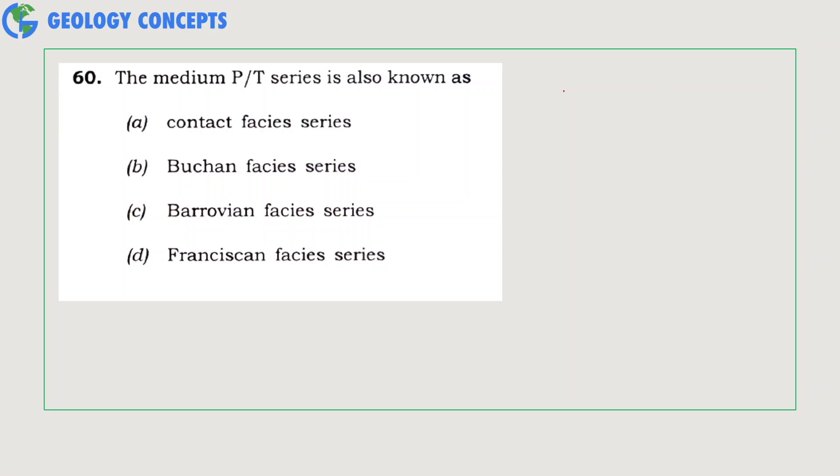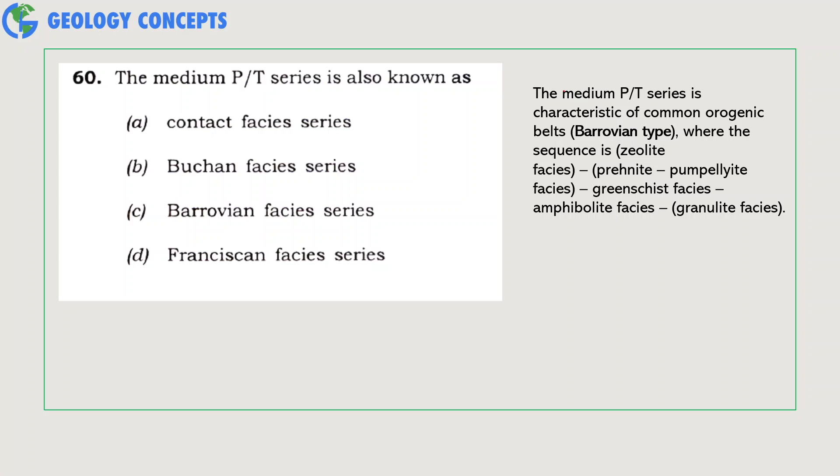The medium pressure/temperature series is also known as contact facies series, Buchan facies series, Barrovian facies series, or Franciscan facies series? The medium pressure/temperature series is characteristic of common orogenic belts which are typically referred to as Barrovian type, where the sequence is zeolite facies, prehnite-pumpellyite facies, greenschist facies, amphibolite facies, and granulite facies.